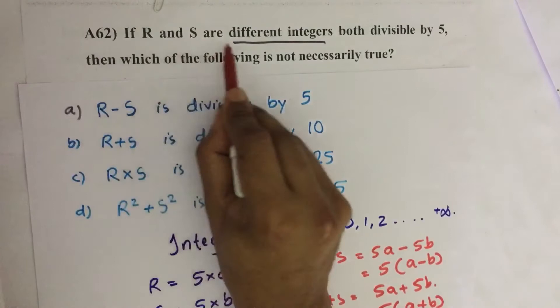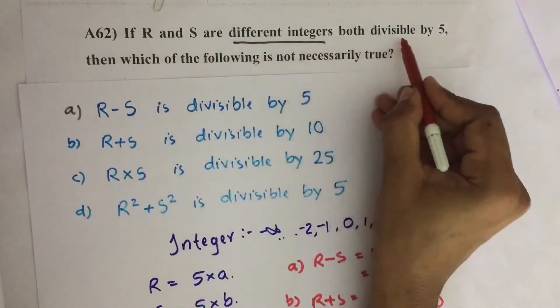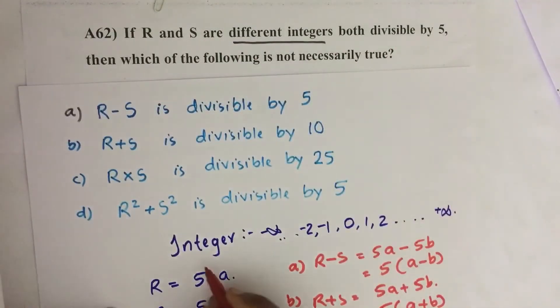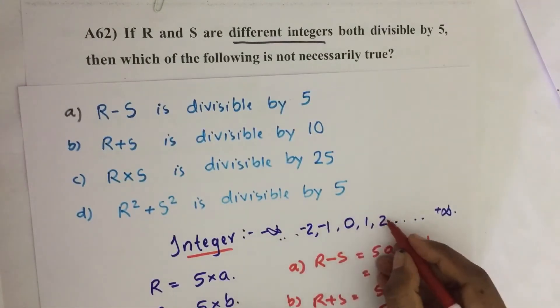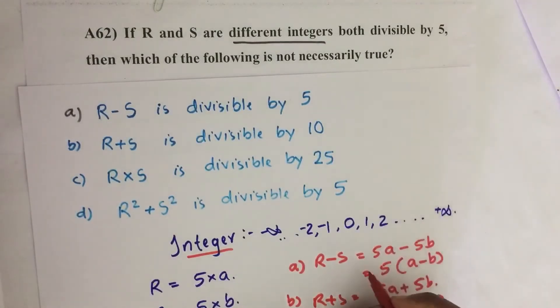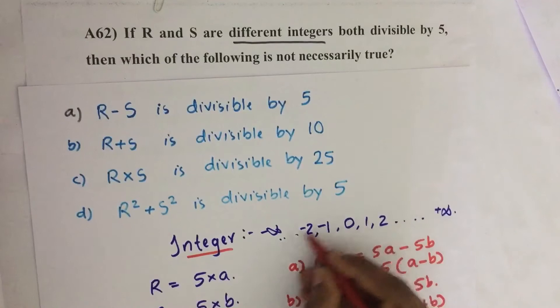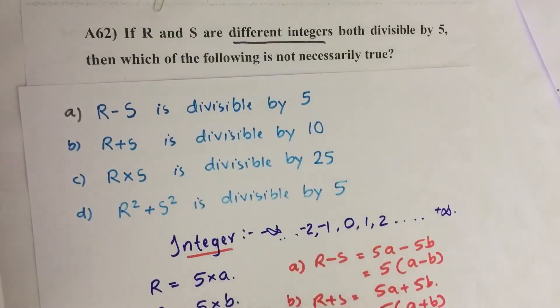What is meant by an integer? An integer is a real number which we can write without any need of a fraction. So 0 is an integer, 1 is an integer, 2 is an integer, up to infinity. Similarly, on the left side, minus 1, minus 2, minus 3, up to minus infinity are integers.